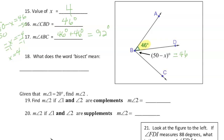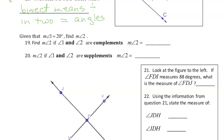What does the word bisect mean? That's the key to the whole problem. Bisect means divide into two equal angles. You need to know that complements are 90 degrees and supplements are 180 degrees.